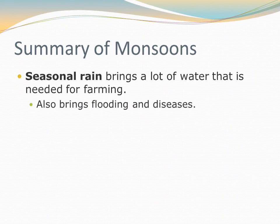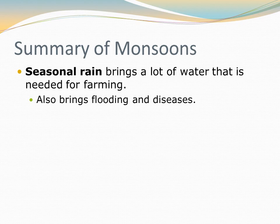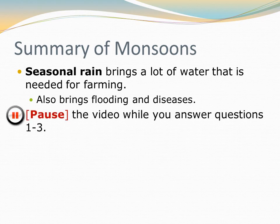The monsoons are that seasonal rain that brings lots and lots of rain — lots of water that the region needs for farming. These monsoon rains can last for months. It's good because it brings water needed for farming, and the silt from flooding helps to restore fields. But the flooding itself can kill people, and it can also bring diseases. Remember, a lot of those diseases are waterborne, and diseases spread by mosquitoes — and mosquitoes love standing water.